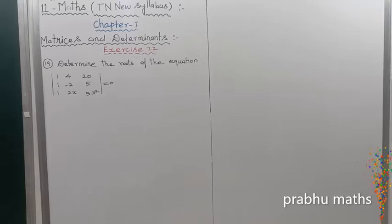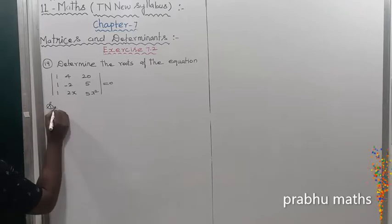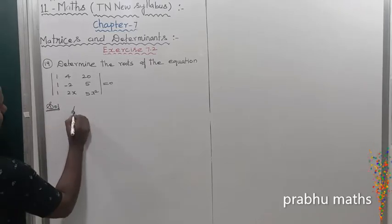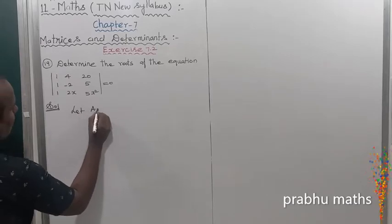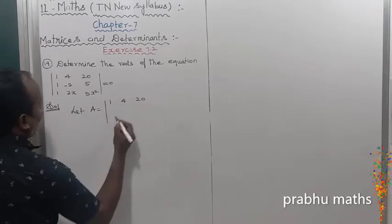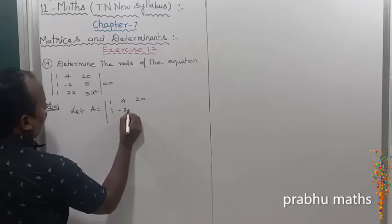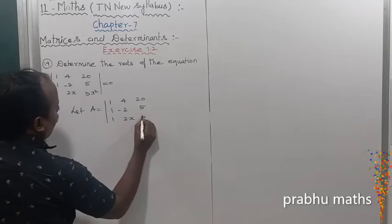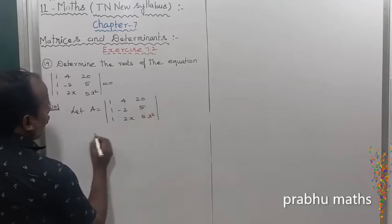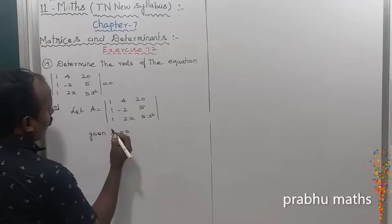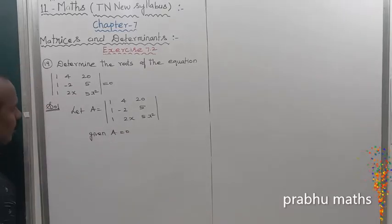Determine the roots of the equations. First of all, the given matrix equation. Let us consider the A value, that is equal to the matrix with entries 1, 4, 23, 1, minus 2, 2, 5, 1, 2, x, 5, x square. Given that the determinant A is equal to 0.